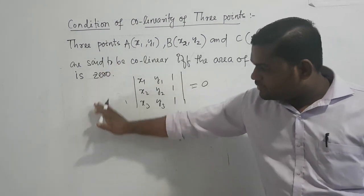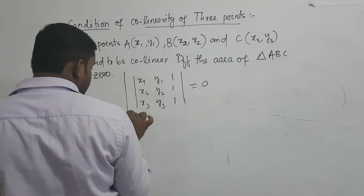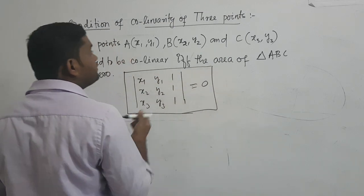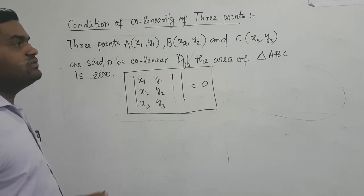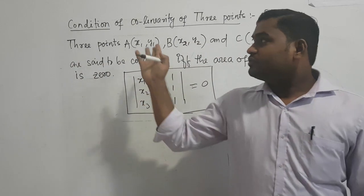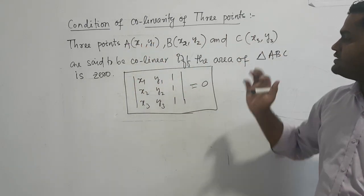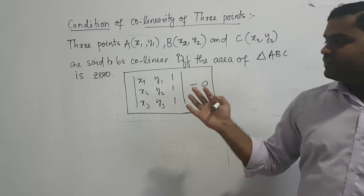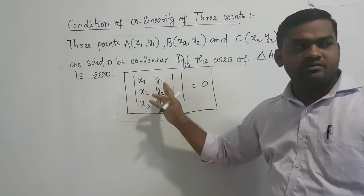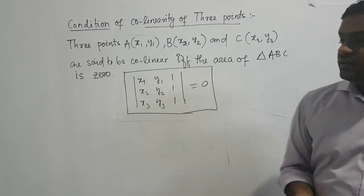This is the condition for collinearity of 3 points: points A(x1, y1), B(x2, y2), and C(x3, y3) are collinear if and only if the determinant of [x1, x2, x3 / y1, y2, y3 / 1, 1, 1] equals zero.